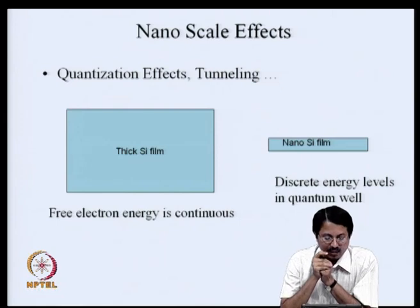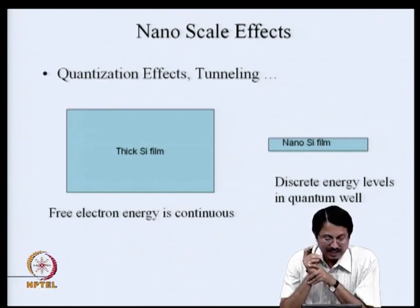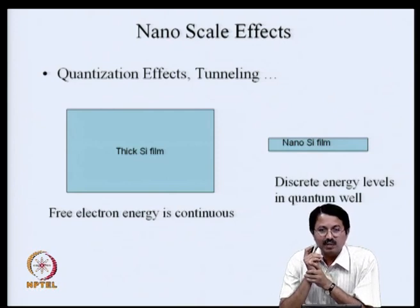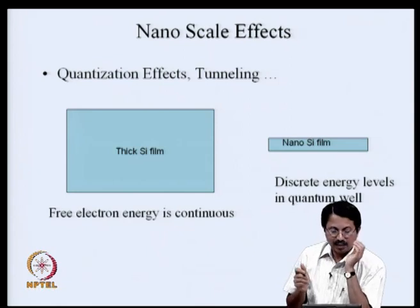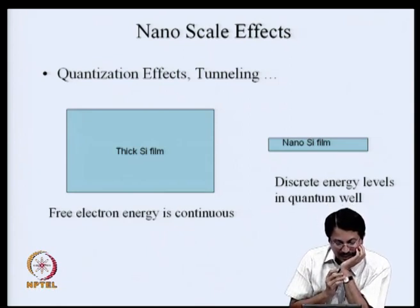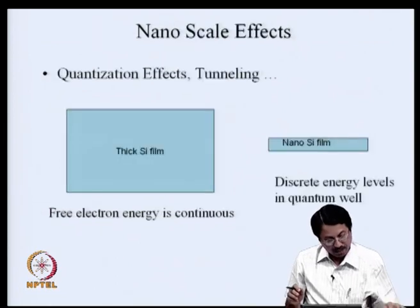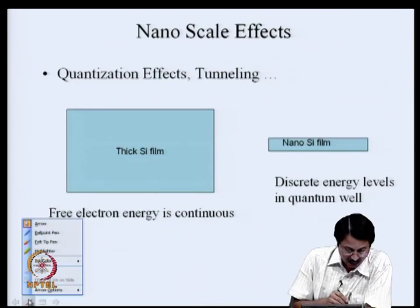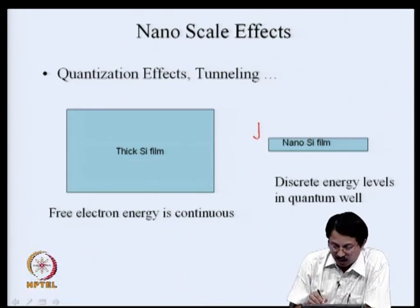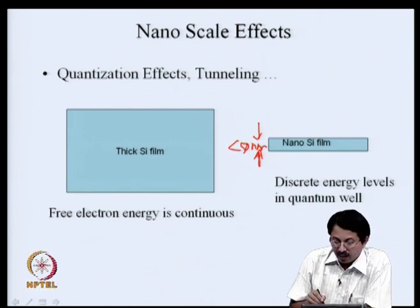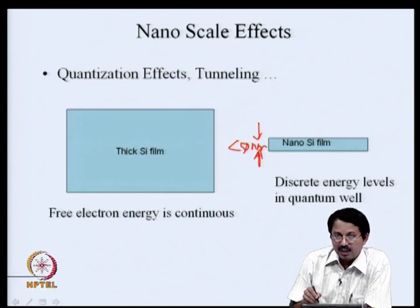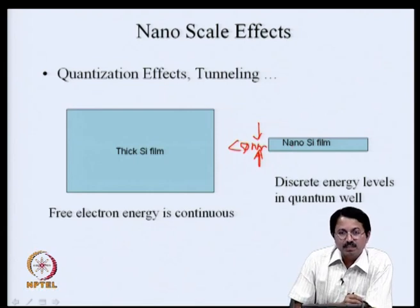In addition, when we start scaling dimensions to the nanoscale, some physical properties themselves start changing. We have been building chips on bulk silicon — a fairly thick silicon film. Today we are talking of building chips in silicon films as thin as less than 50 nanometers. As we thin it down further, the properties of this nano silicon film are no longer the same as those of bulk silicon.